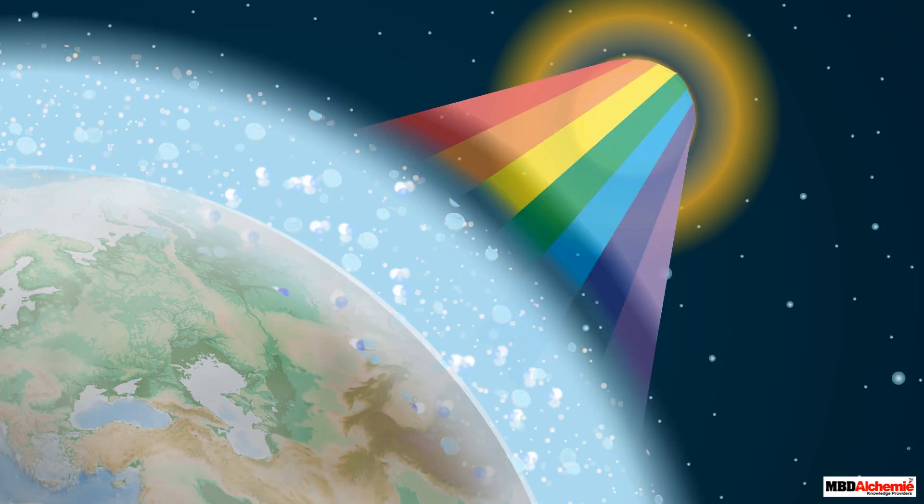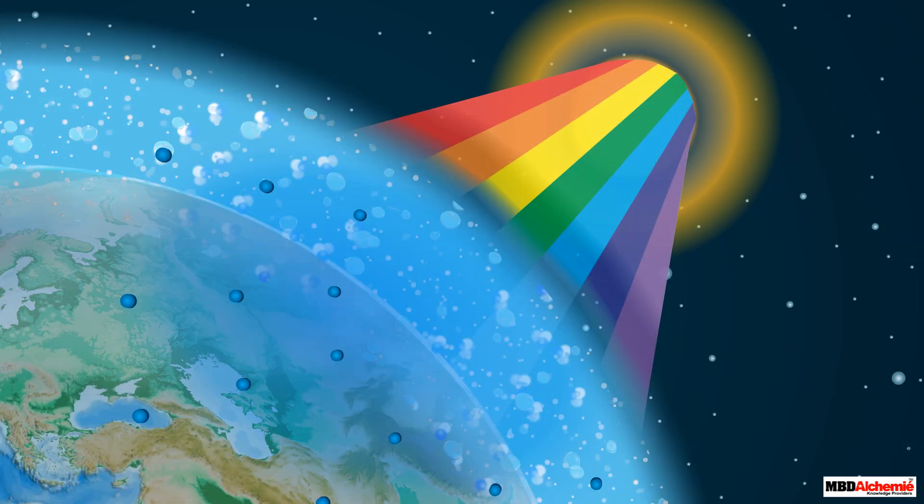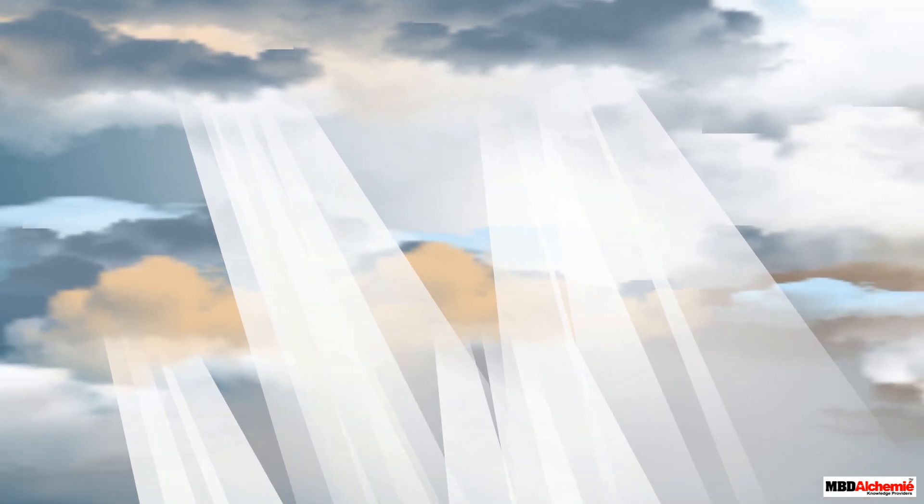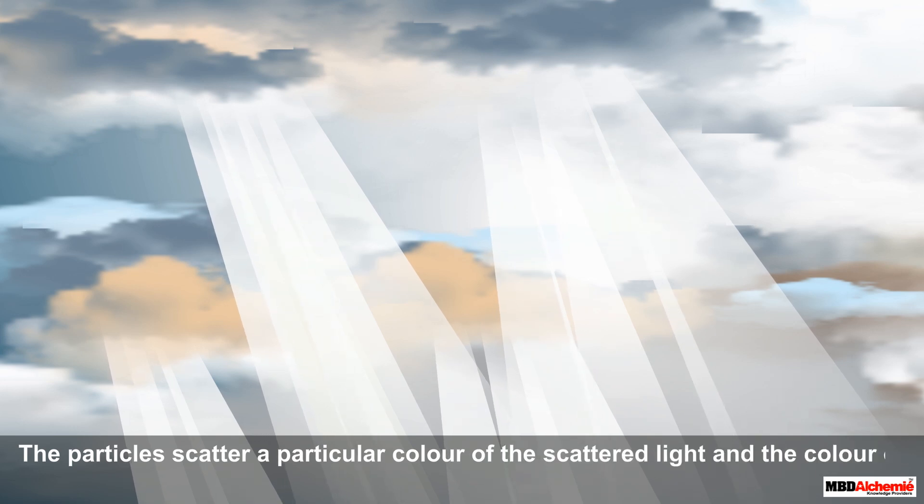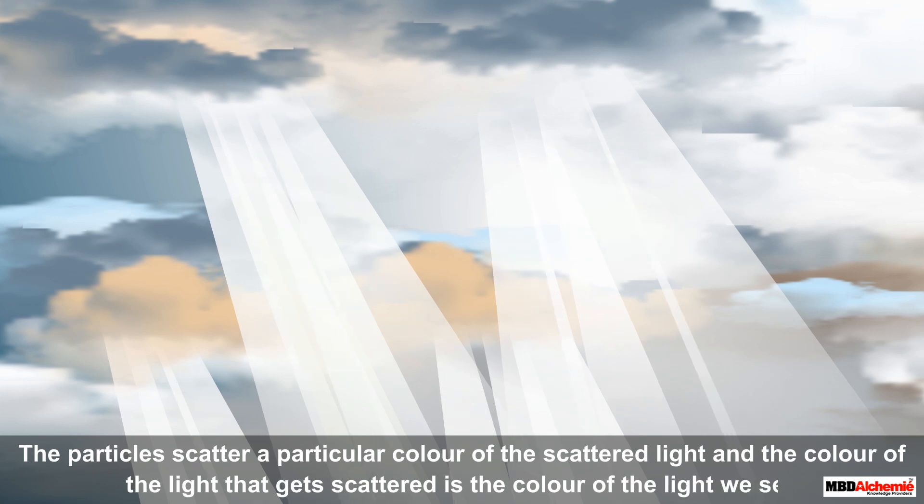When sunlight strikes these particles, it gets scattered by the particles and the scattered light reaches us. The particles scatter a particular color of the light, and the color of the light that gets scattered is the color we see.